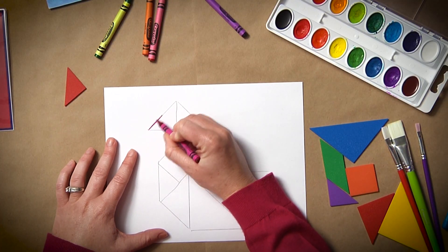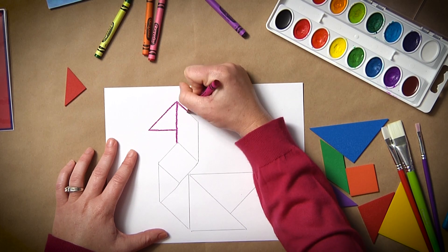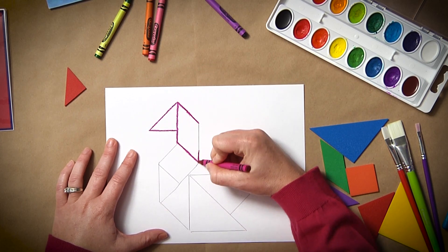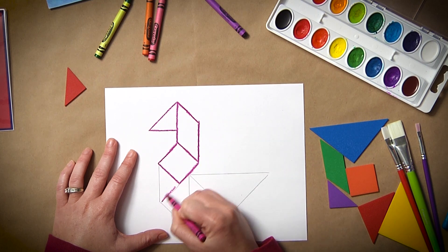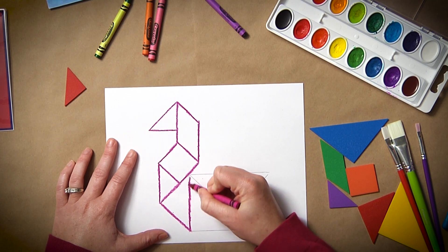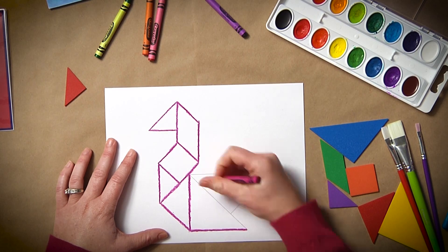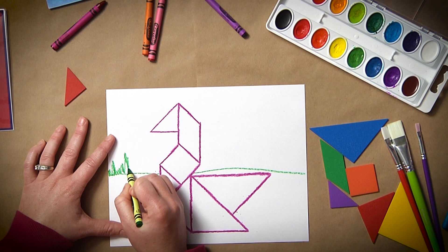Next, have students remove the tangrams and trace over the pencil in crayon. They can also add in additional background elements, like a horizon line and some small plants.